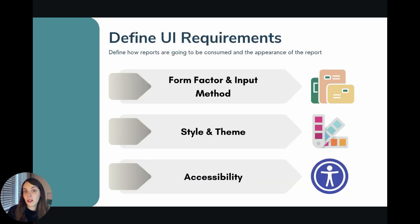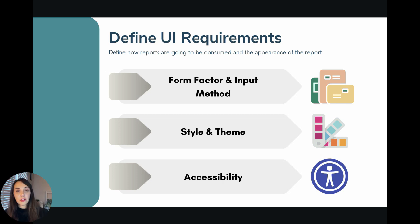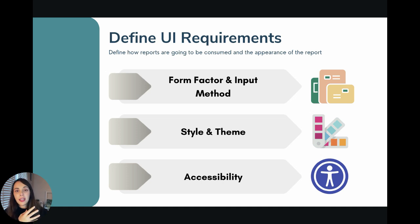What things should we consider when defining UI requirements? There are three key things. First, you need to understand what is the form factor or input method — meaning what kind of devices will be used to visualize your reports. Building a report for the web is very different from building a report for an iPad or a mobile device, so you need to adapt the way you design your reports to that device.